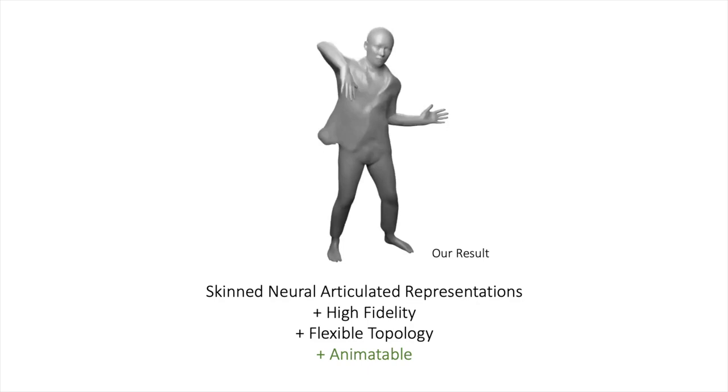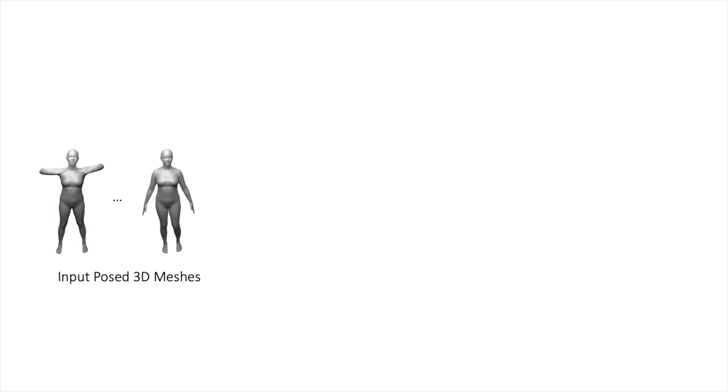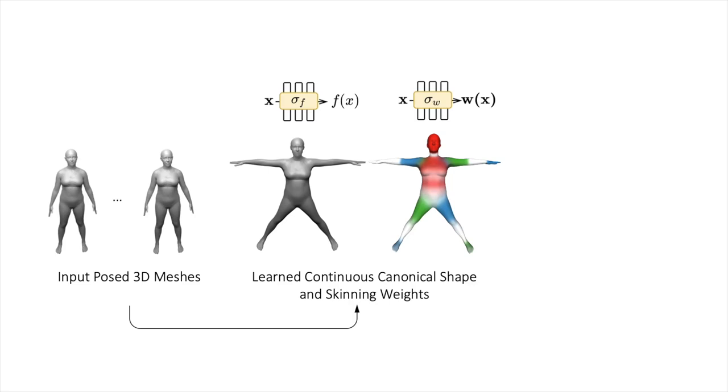The input to our method is a set of posed 3D meshes in combination with the corresponding object poses. Given this input, we jointly learn a shape and skinning weight representation in canonical space. This allows our model to reconstruct continuous implicit surfaces for unseen poses, even in cases where the target pose is far from the poses observed during training.